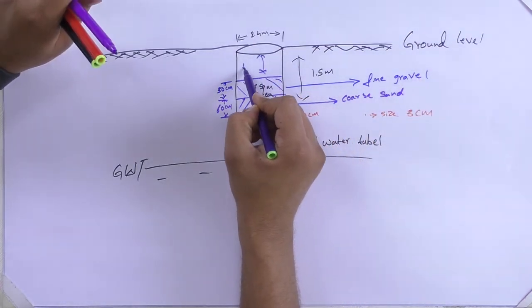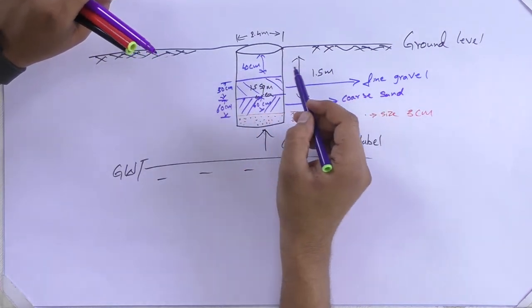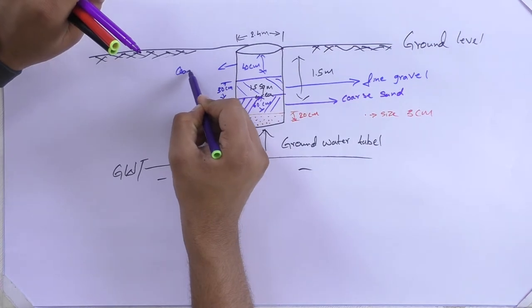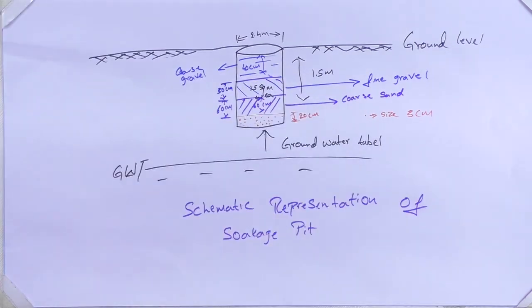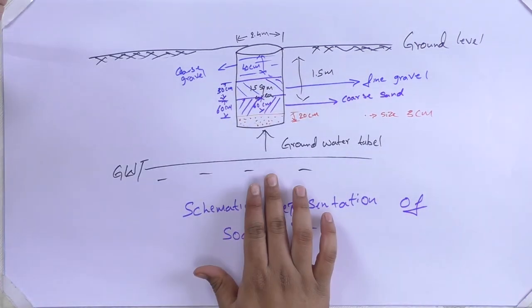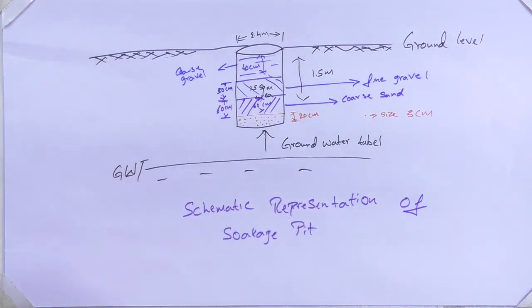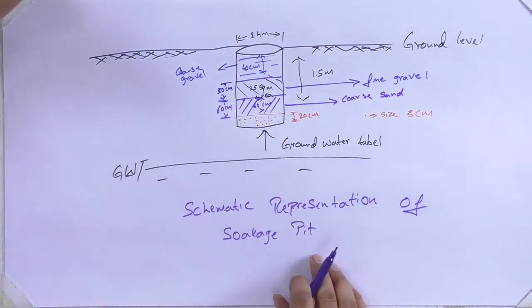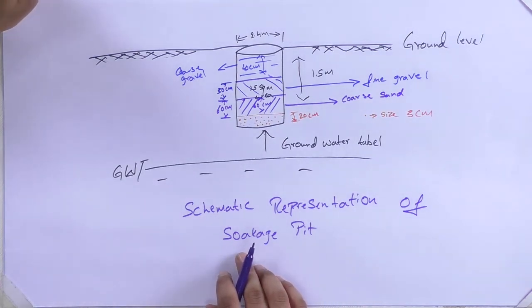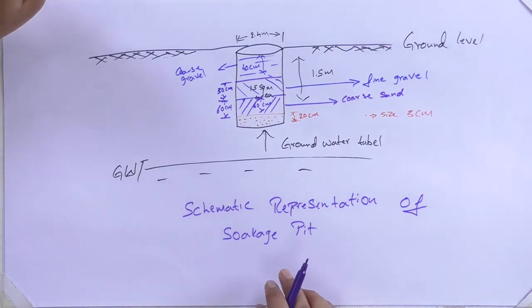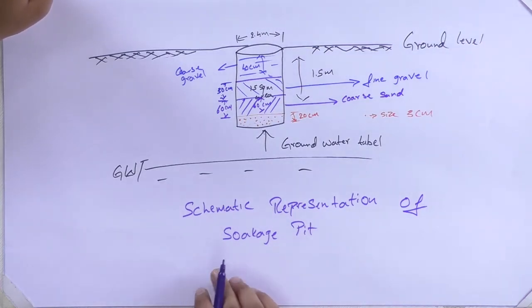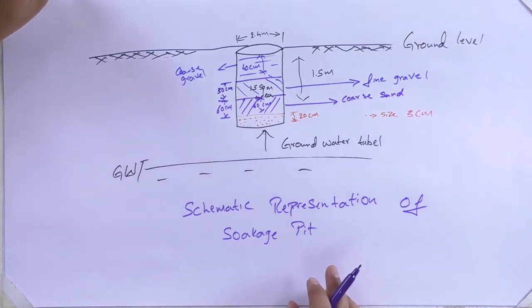Above the coarse sand layer, 30 centimeters is filled with fine gravel, and the remaining 40 centimeters may be filled by coarse gravel. This is a schematic representation of a soak pit. The pit bottom area of the trench may vary for different soils: for clay with light sand, the trench bottom area for a family of five may be 155.7 square meters; for sandy loam it is 28 square meters; and for fine sand and coarse gravel it is kept at 18.6 square meters.